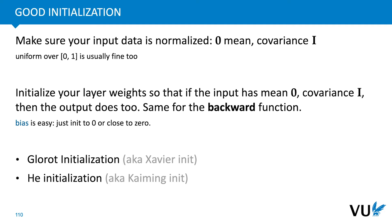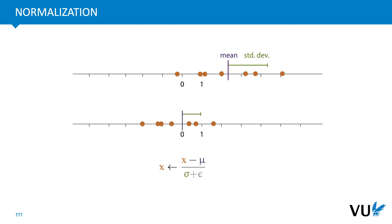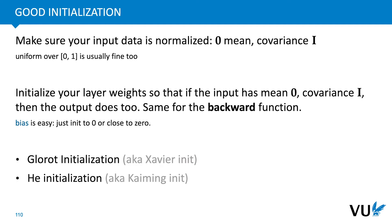We'll look at two forms of initialization: Glorot initialization and He initialization, respectively also known as Xavier initialization and Kaiming initialization. But first let's look at this normalization. How is that done? For one feature it looks like this: we compute the mean and we divide by the standard deviation, and that rescales our data to essentially look like it's standard normally distributed. And if we do this for every feature separately then we end up with this property that we have a zero mean and an identity covariance matrix.